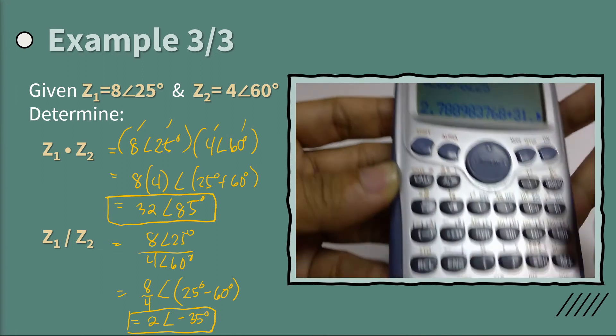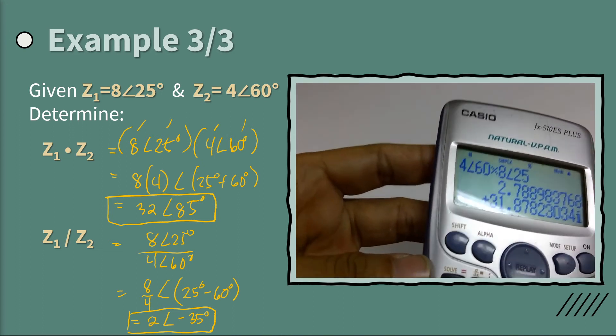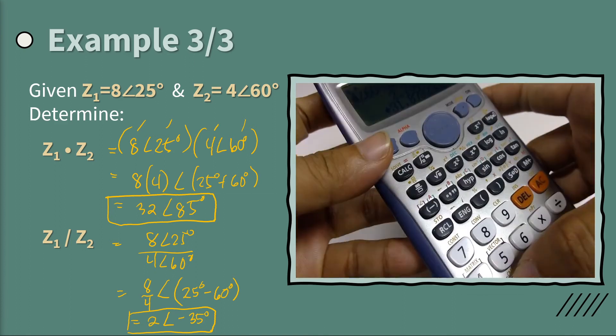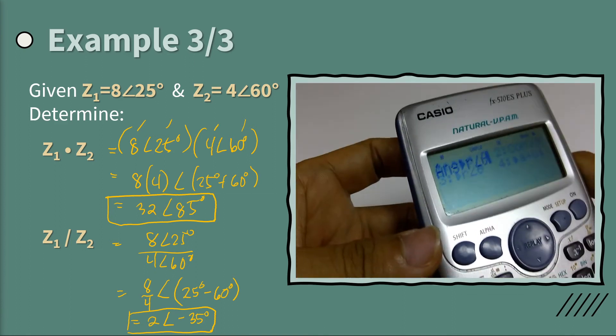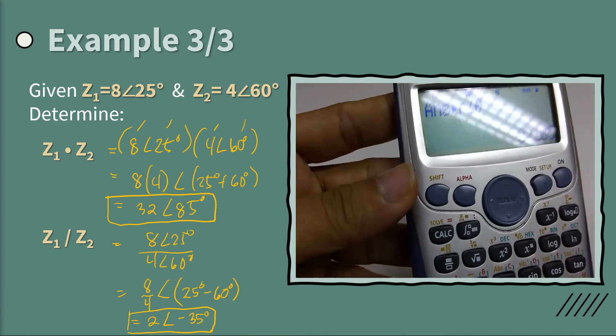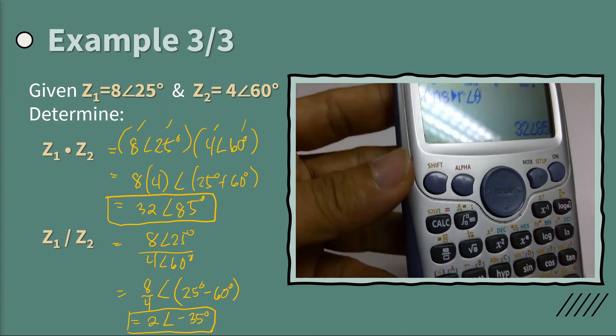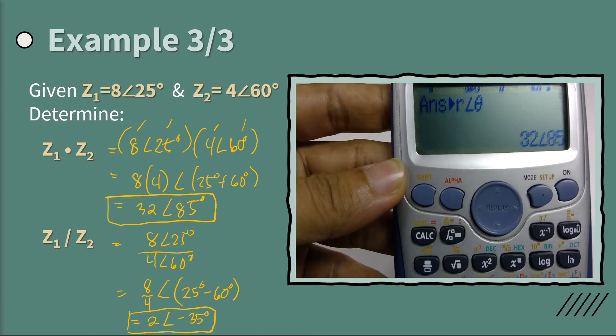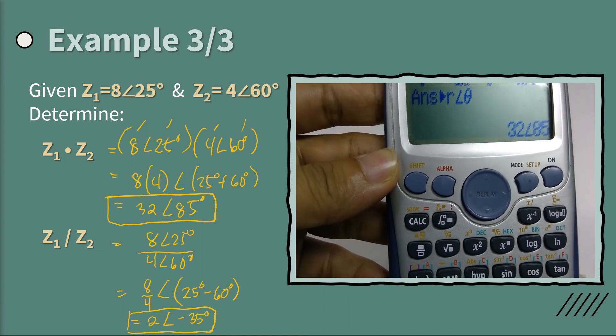So press equal sign. And then you remember what I said, that the default result of the complex number is rectangular form. And then you can convert it to polar form.